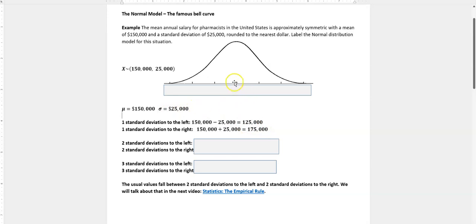So if you think about $150,000 being the middle, take away $25,000, you're one down. Add $25,000, you're one up.